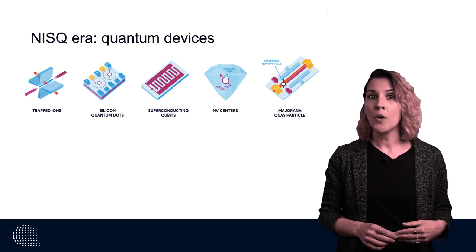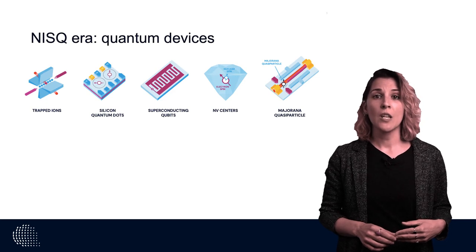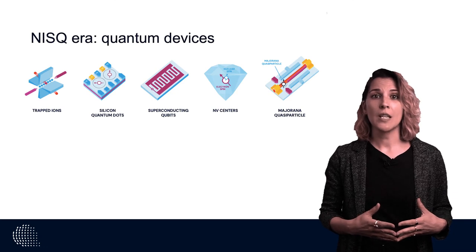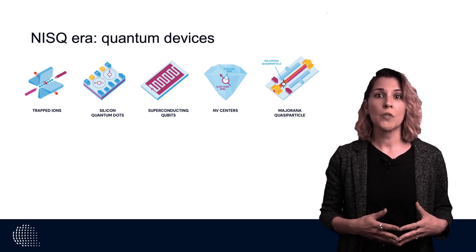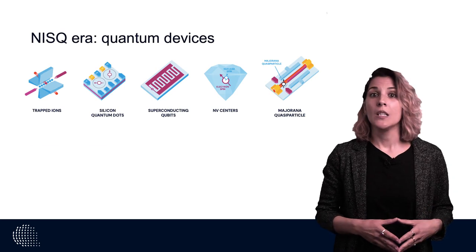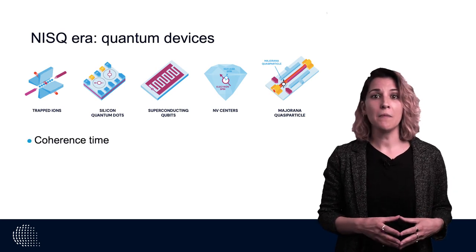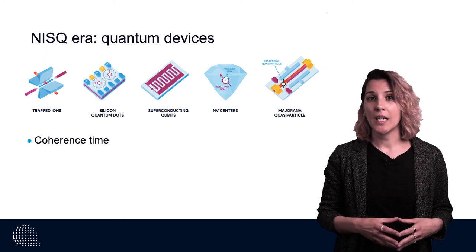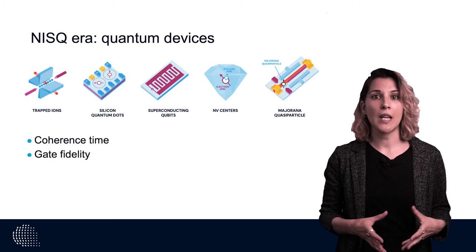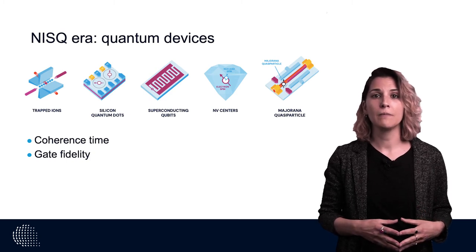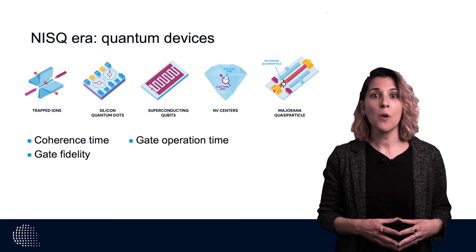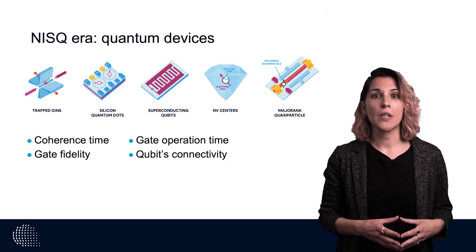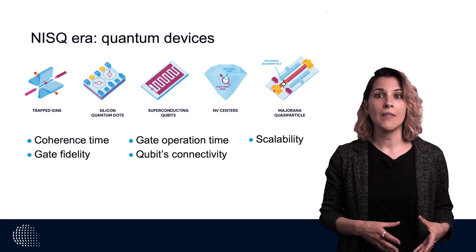As you may know, qubits can easily lose their information just through the interaction with the environment. Here you can see some of the most relevant properties of qubits that are the coherence time or qubit lifetime, that is the time a qubit can hold a quantum state, the gate fidelity that refers to how accurate a gate can be performed, the gate operation time or how long a gate takes to execute, and the qubit's connectivity, as well as their scalability and maturity.